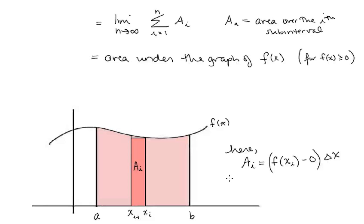So a_i, that area, is this distance here — f of x_i minus 0 multiplied by the width of the sub-interval, which is delta x. And this definite integral gives us the area under f of x.